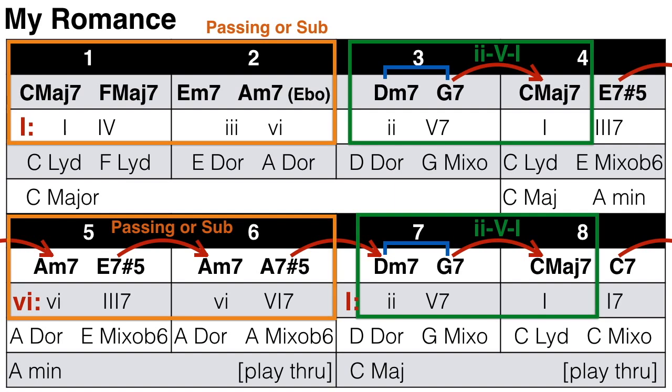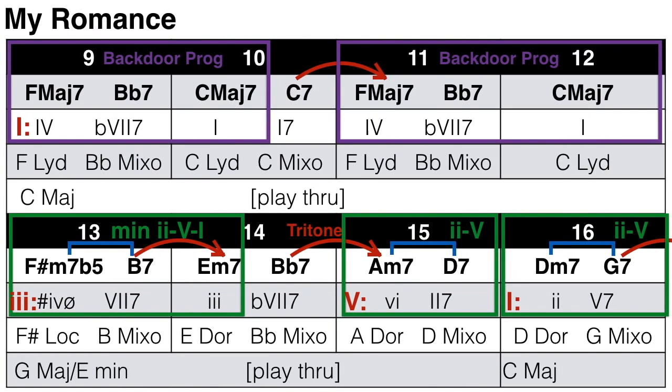The first level improvisation simply involves soloing using the relevant mode for each chord — so we could play C Lydian, F Lydian, E Dorian, A Dorian, D Dorian, G Mixolydian, C Lydian, E Mixolydian b6, A Dorian, E Mixolydian b6, A Dorian, A Mixolydian, B Mixolydian, C Lydian, C Mixolydian, F Lydian, Bb Mixolydian, C Lydian, F Lydian, Bb Mixolydian, C Lydian, F# Locrian, B Mixolydian, E Dorian, Bb Mixolydian, A Dorian, D Mixolydian, D Dorian, G Mixolydian — and so on for every chord.